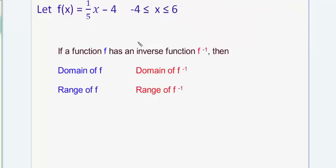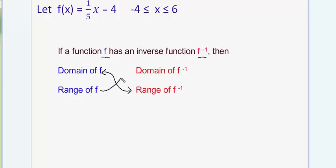My strategy to solve the problem is to look at the relationship between the domain and range of f and the domain and range of its inverse. If you have a function f that's invertible, it has an inverse function, and it turns out that the domain of the original function is always the same as the range of f inverse, and that the range of f is the domain of f inverse.